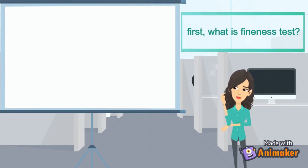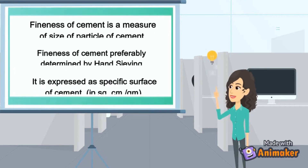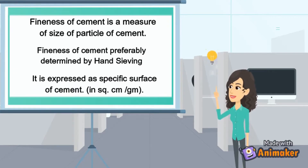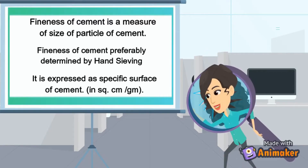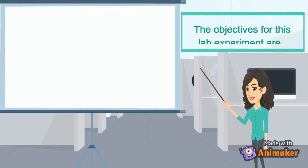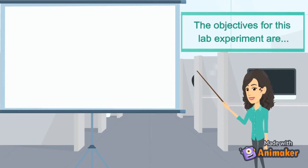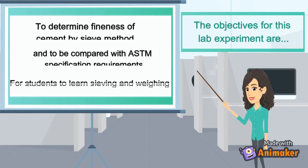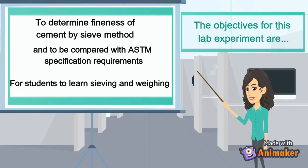What is fineness test? Fineness of cement is a measure of the size of particle of cement, preferably determined by hand sieving. It is expressed as a specific surface of cement. The objectives for this lab experiment are: to determine fineness of cement by sieve method, to compare with ASTM specification requirements, and for students to learn sieving and weighing.